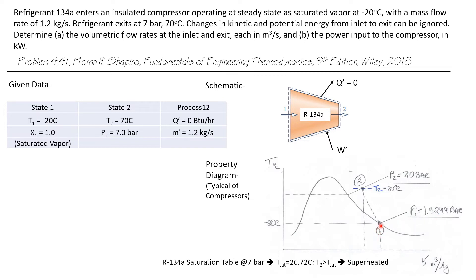From state one, we compress the refrigerant to a higher pressure and a higher temperature. We know both. And if we look in the saturation table at 7 bar, we see that the saturation temperature is only 26.7 degrees C. But here at 70 degrees C at state two, this is greater than the saturation temperature. So clearly state two is superheated.